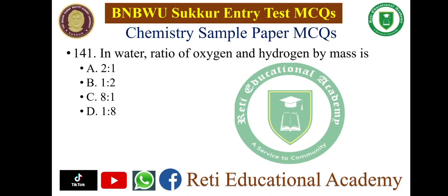Question number 141: In what ratio of oxygen and hydrogen by mass? A. 2:1, B. 1:2, C. 8:1, D. 1:8. The correct answer is C — 8:1. The ratio of oxygen to hydrogen by mass is 8:1.